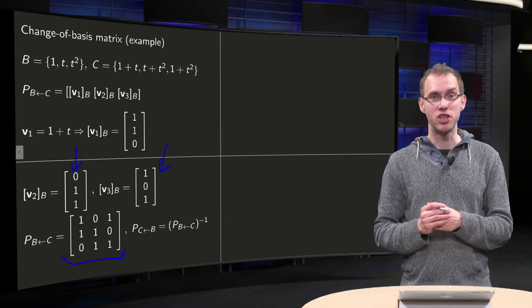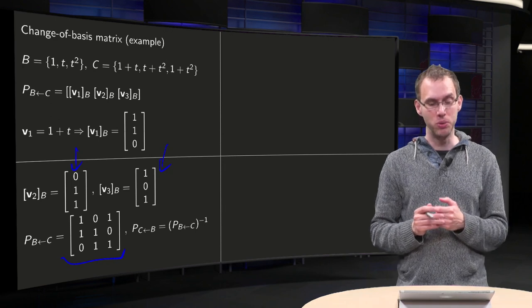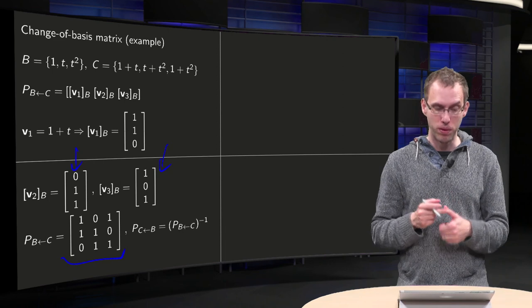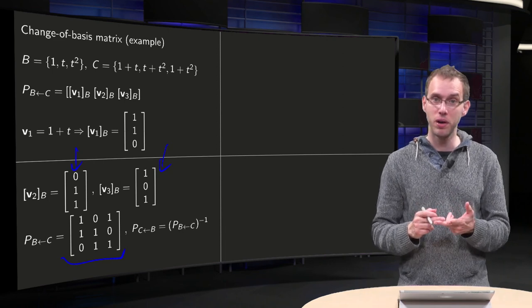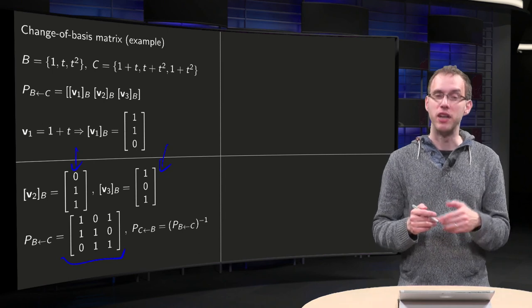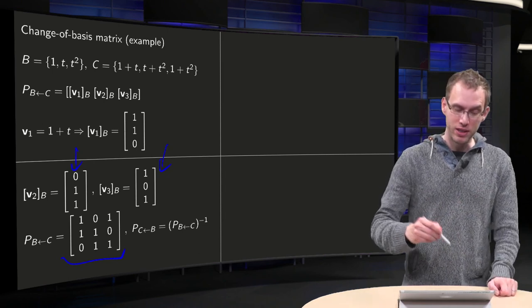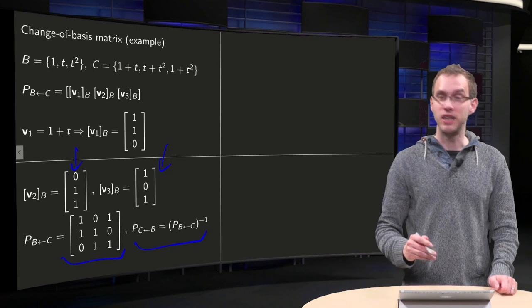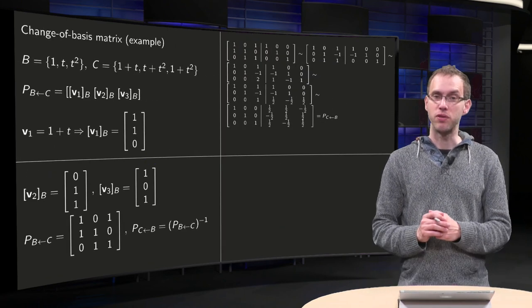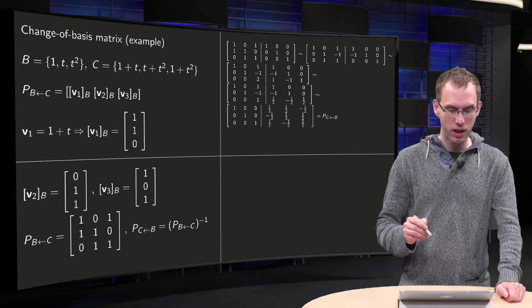Finding the other one is slightly harder, so what we could do is express U1. So, 1 in terms of 1 plus t, t plus t squared and 1 plus t squared, well that requires some row reduction, but it is doable, and similarly for the other ones. What we can do as well is just take the inverse of the matrix we just found. And that is what we are going to try, so we compute the inverse.